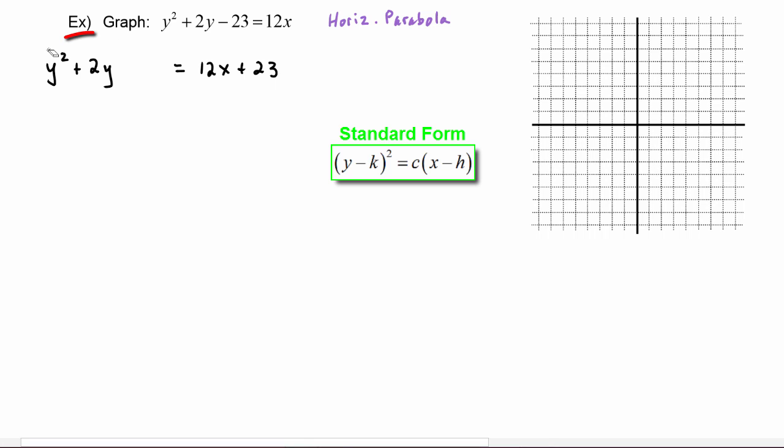To complete the square in the y term, we know that we're going to need to take one half of two and square that. Half of two is one, one squared is equal to one. So we come over on the left hand side and put a plus one, and since there's nothing multiplying it over here we come over to the right hand side and put a matching plus one.